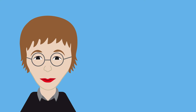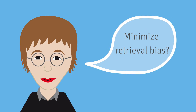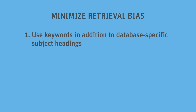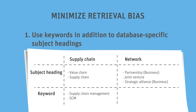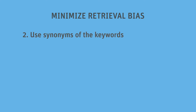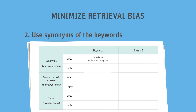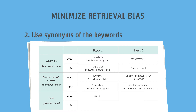Julia asks Ms. Müller how she can minimize retrieval bias in her literature review. Ms. Müller says she should use keywords in addition to database-specific subject headings. New database entries might not yet have been assigned standardized subject headings, and if the research subject is brand new, subject headings may not yet exist. To obtain a hit list that is as comprehensive as possible, Julia should also use synonyms of the keywords.